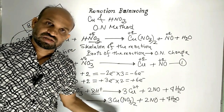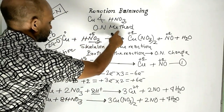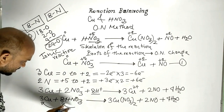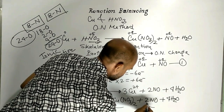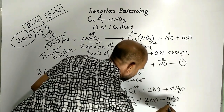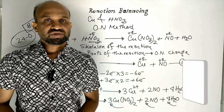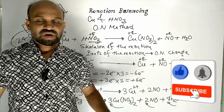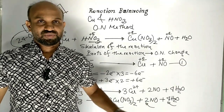The reaction is balanced by the oxidation number method. The coefficients are: 3 for copper, 8 for nitric acid, 3 for copper nitrate, 2 for nitric oxide, and 4 for water molecules. Thank you very much.